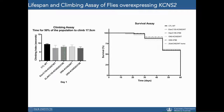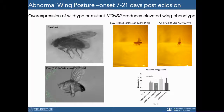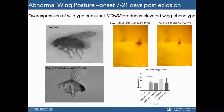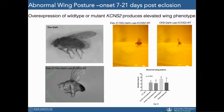We did not observe significant differences in motor function at day one using climbing assays, or in survival. However, we do observe abnormal wing posture with an onset of 7 to 21 days post-eclosion in lines overexpressing either the wild-type or mutant form of KCNS2, producing an elevated wing phenotype. We quantified abnormal wing posture at day 14 and see significant differences in lines overexpressing the wild-type or mutant form, either pan-neuronally or in motor neurons, compared to wild-type flies.